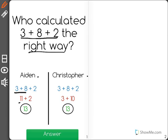And Christopher, it looks like he kept his 3 and added 8 plus 2 first to get 10. And then when he added 3 plus 10, he also got 13.